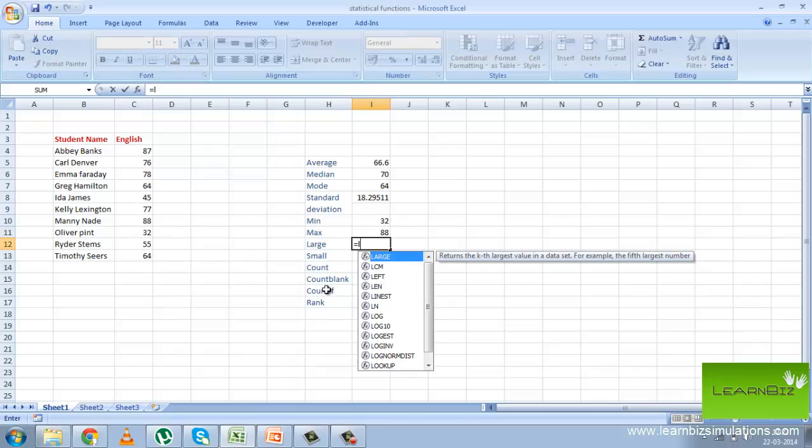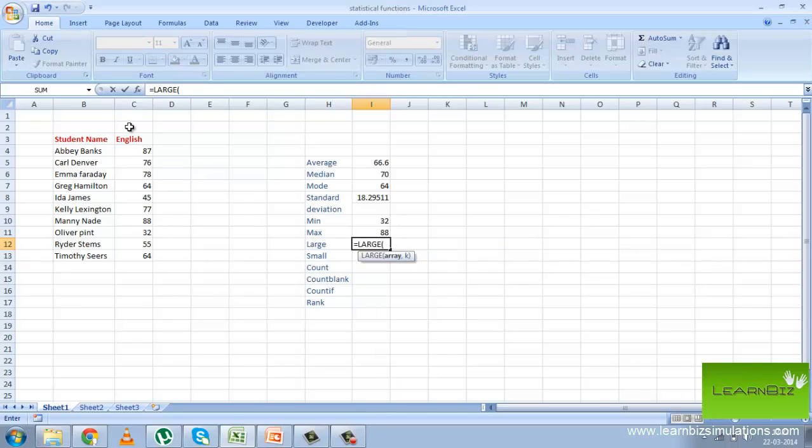So here we are trying to find the third largest number, that is 78. Then we are trying to find the second smallest number, that is 45.